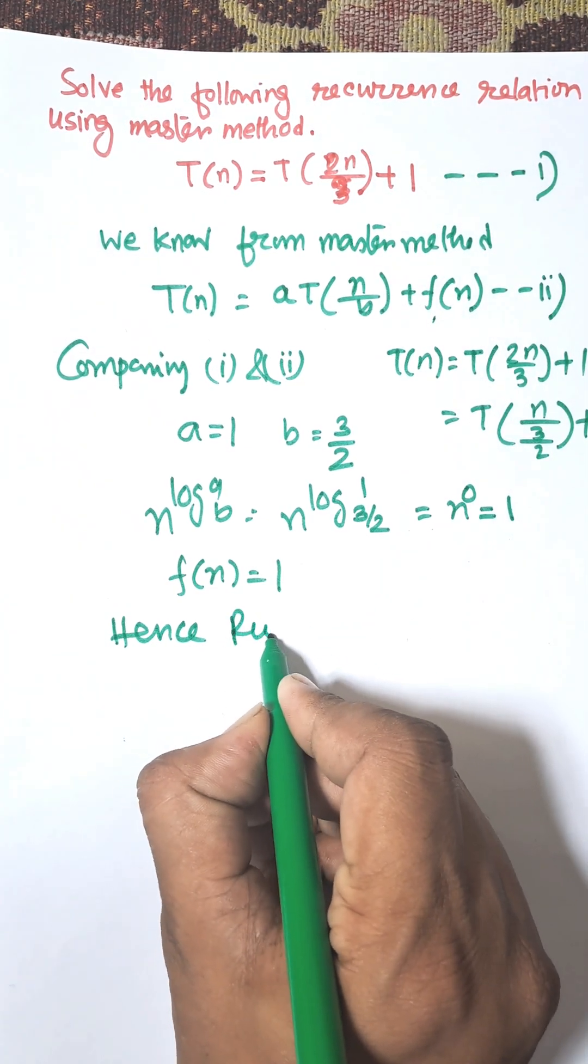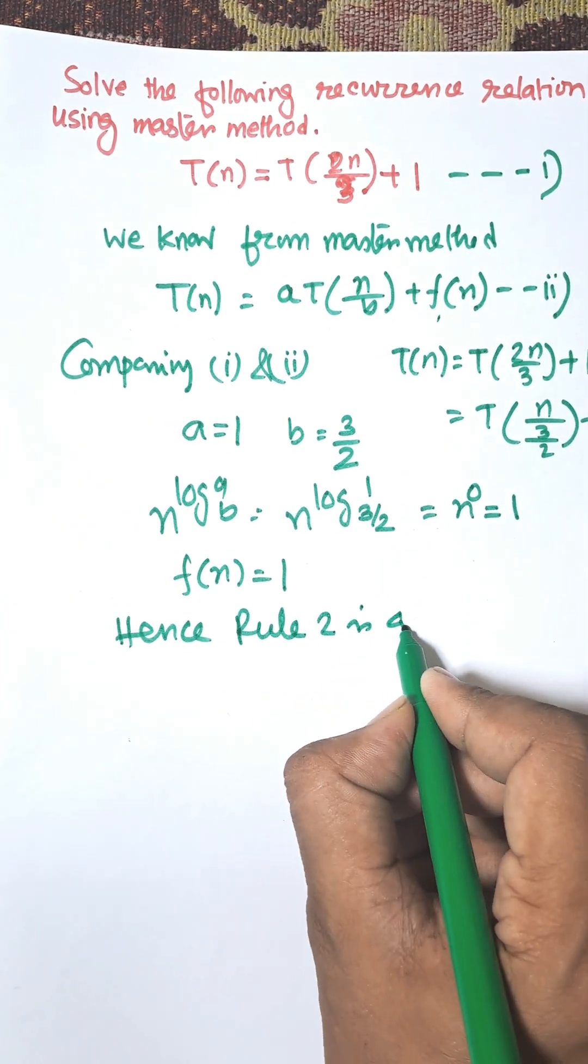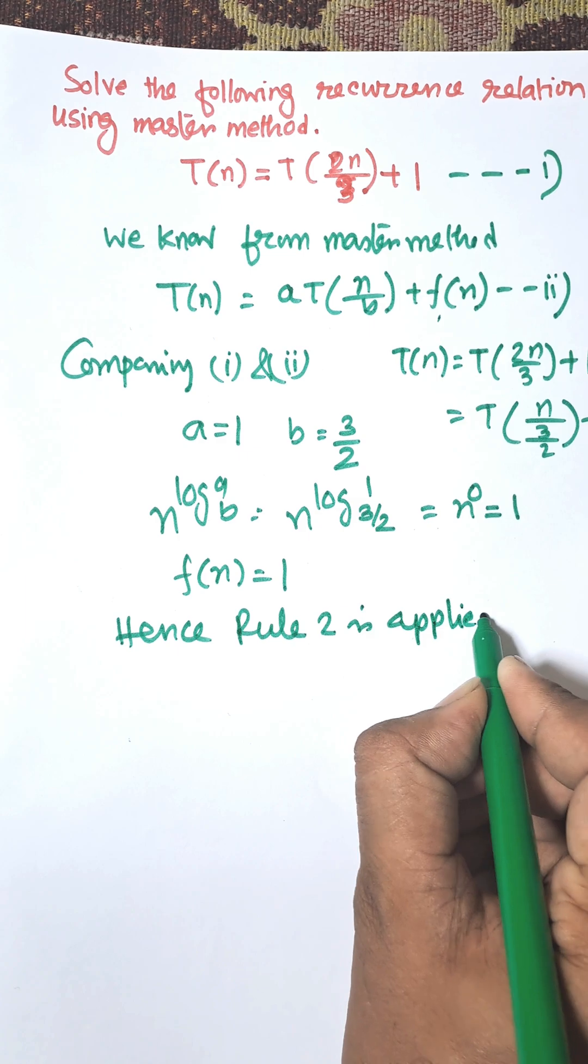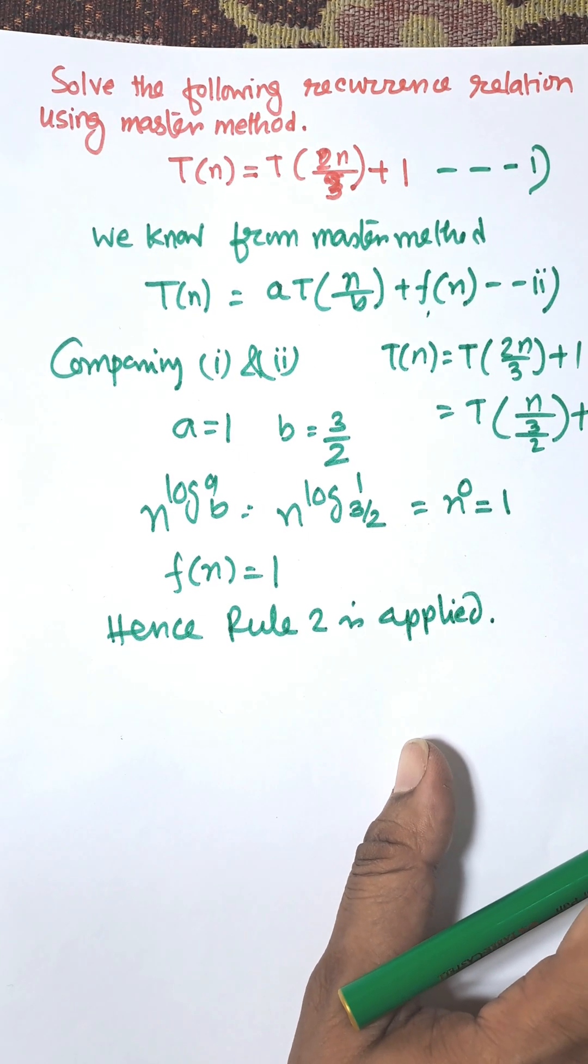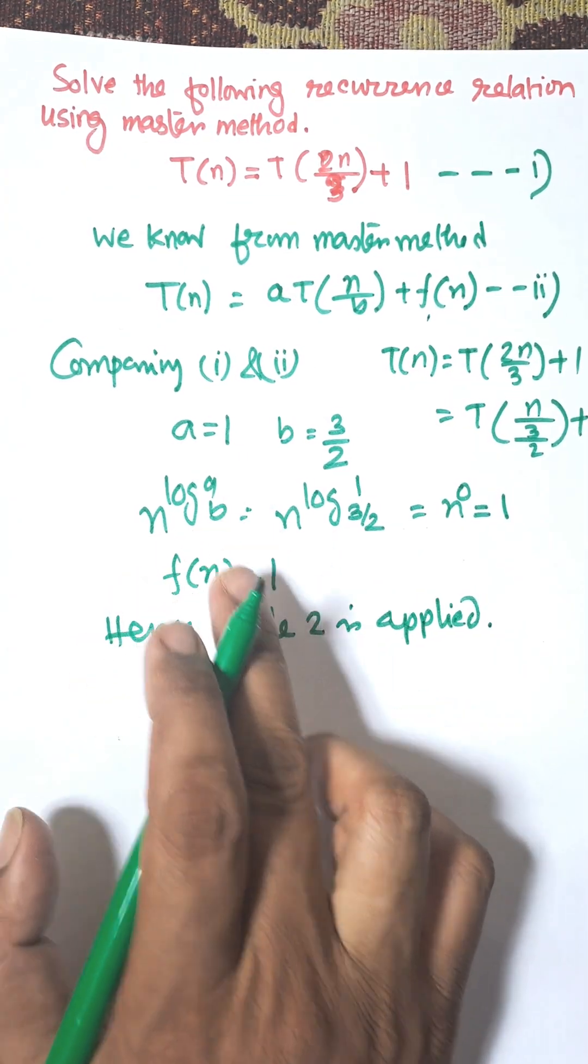Hence no need to subtract eta or add eta. Hence rule 2 is applied. That is rule 2 of master method is applied where f(n) equals n^(log_b a).